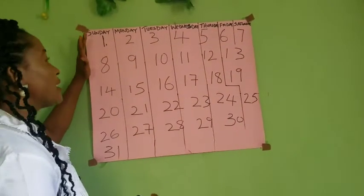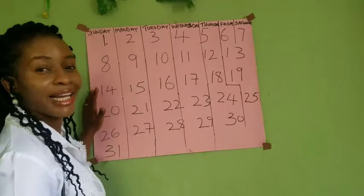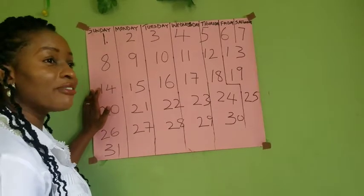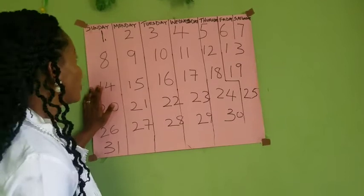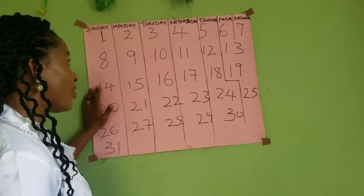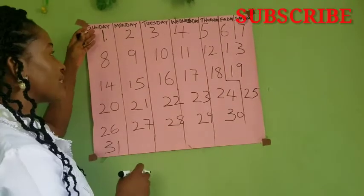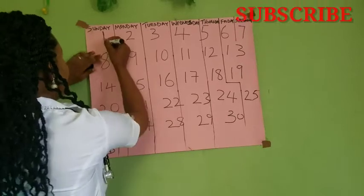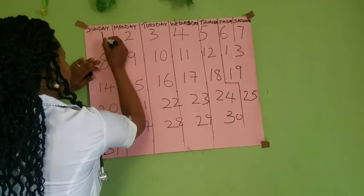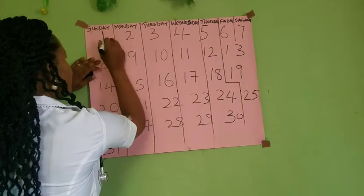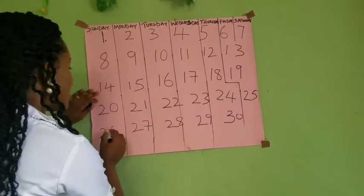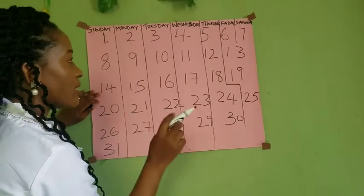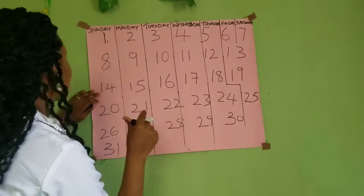Let's assume this is August's calendar and you have a 26-day menstrual cycle. Your day 1 — let's say your menstrual cycle started on the 1st of August. So this is the 1st of August, and you have a 26-day menstrual cycle. Now let's count to 26.